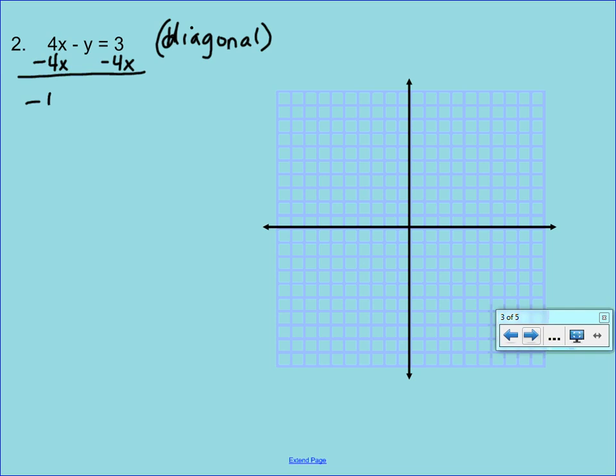When you bring the y down, don't forget to bring the negative sign down as well because now we have a negative y that's equal to a negative 4x plus 3. We aren't quite done yet because we still have a negative 1 that's in front of the y, so we need to undo that multiplication by dividing every single term by a negative 1. So you end up with a y that's equal to a positive 4x minus a 3.